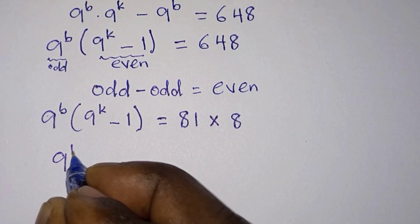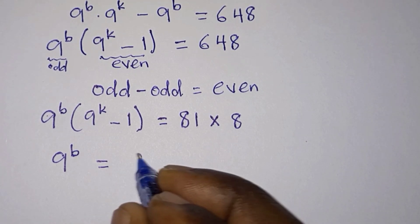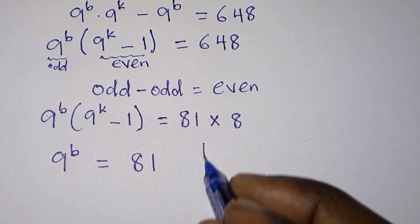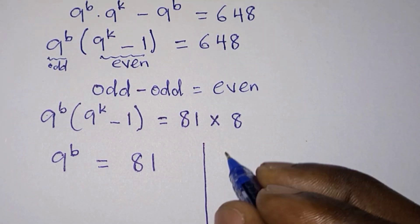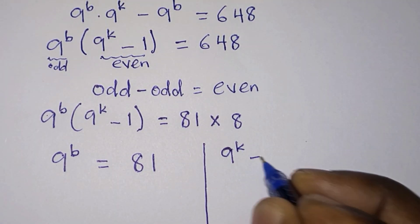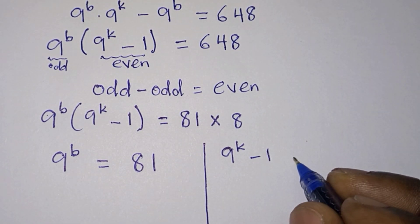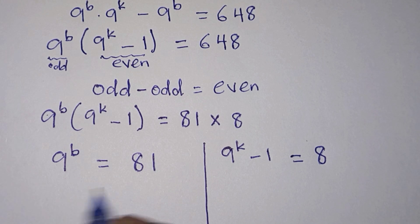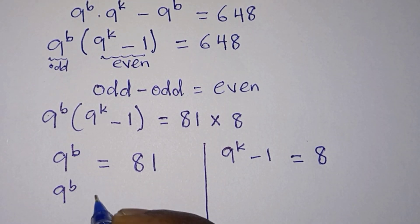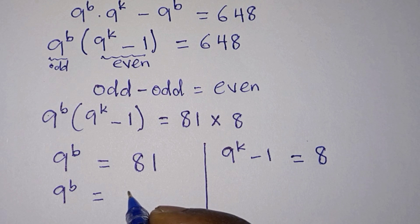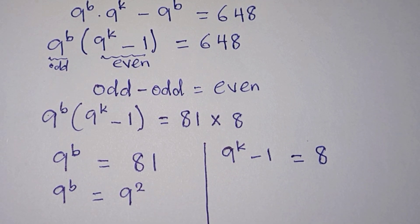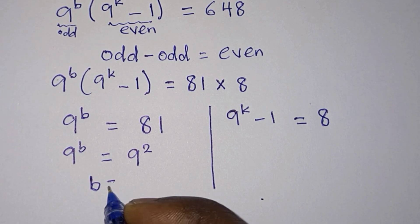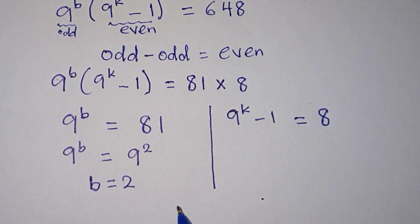From the first equation, 9 to the power b equals 81, which is 9 to the second power. Since the bases are the same, we can equate the powers, so b equals 2.